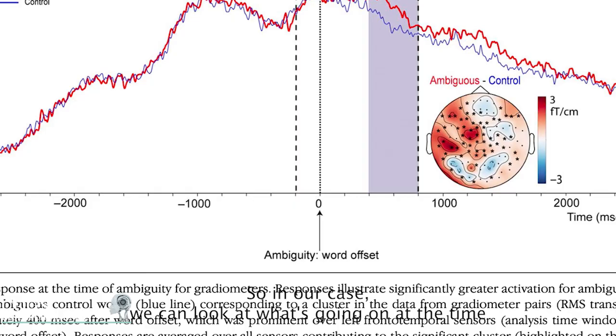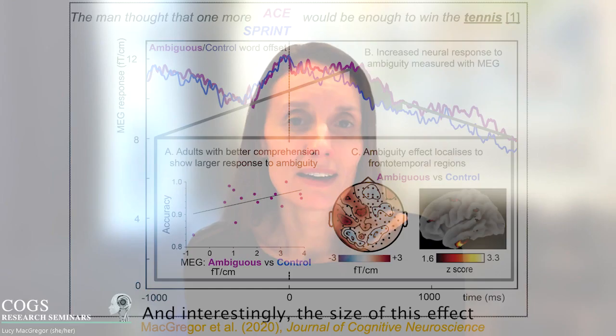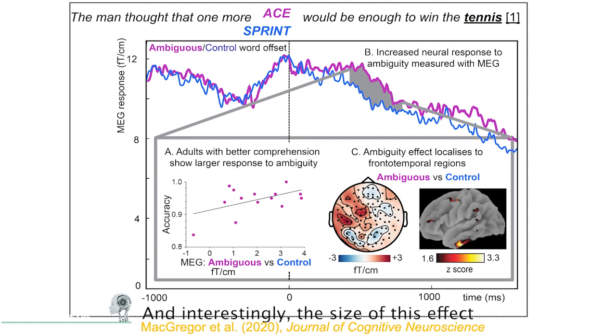What we find is that there's an increase in neural response to the ambiguous word relative to a control word — so a greater response to the word jam compared to storm. And interestingly, the size of this effect relates to a listener's comprehension ability.